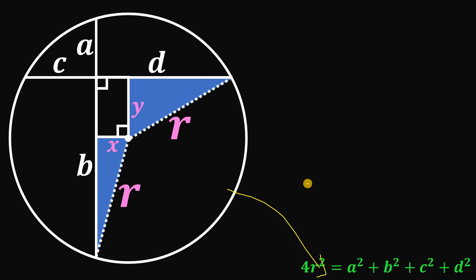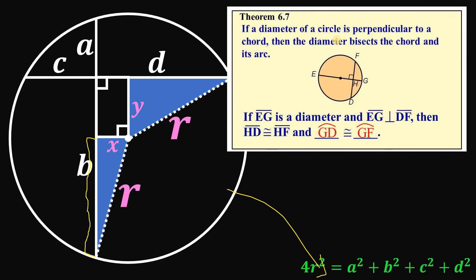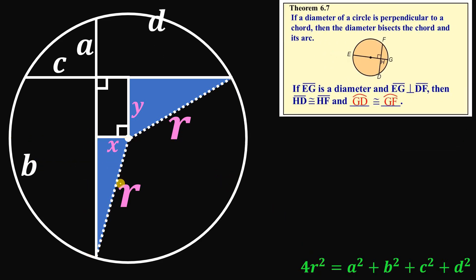Now, what we're going to do is find the length of this segment. We will use this concept: if the diameter of a circle is perpendicular to a chord, then the diameter bisects the chord and its arc. If we extend this segment, we get the diameter of the circle, so it bisects the chord of length A plus B. Therefore, this segment must be equal to A plus B all over 2.